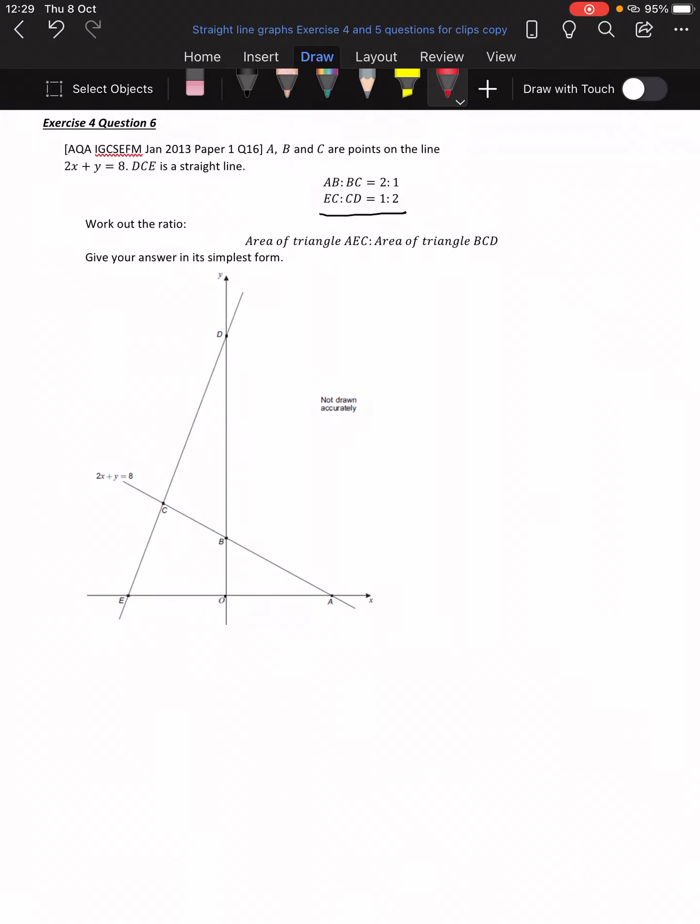And the easiest ones are the ones that lie on 2X plus Y is equal to 8. So the easiest one is probably going to be A and B. Let's start with A. So at A, what do we know? Well, we know that the Y coordinate is equal to 0. Okay, so you're saying that a lot of your students will know this anyway. Yes. Okay, so we work at A, and that's where Y is equal to 0.